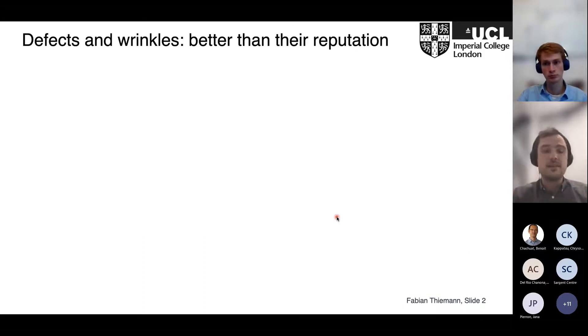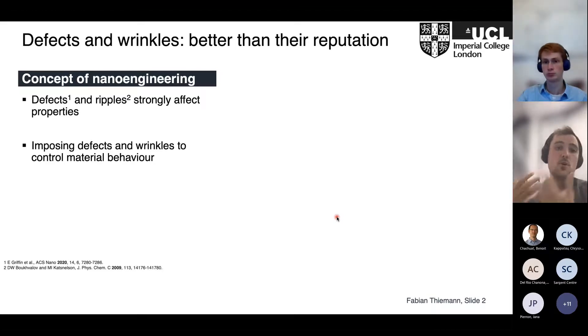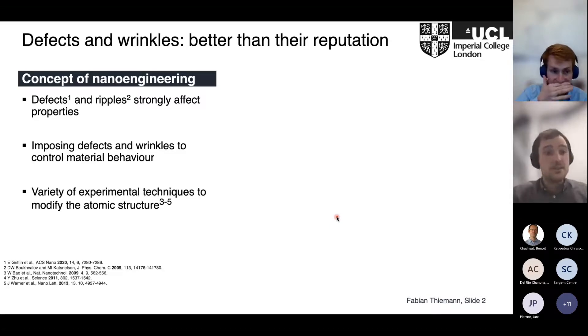The point is their names suggest they're somehow bad, but this is not necessarily the case. We can actually make use of defects and ripples because they strongly affect the properties and material behavior. We can impose them on the material on purpose to control and tailor and tune the behavior. Over the last couple of years there has been so much progress on how to tune and modify the atomic structure of graphene, and this is now really possible on a very precise level.